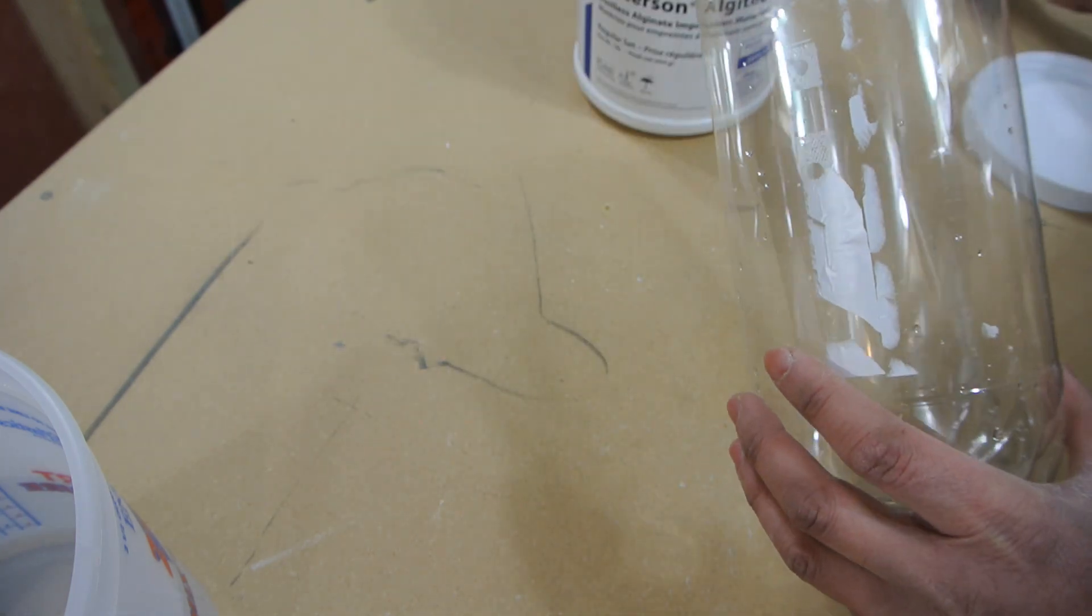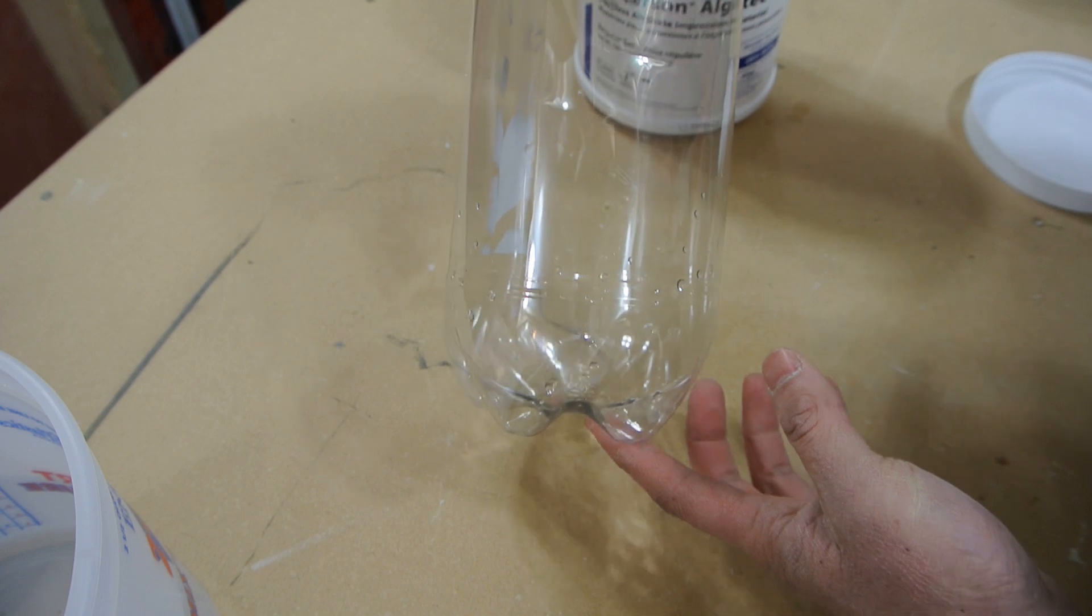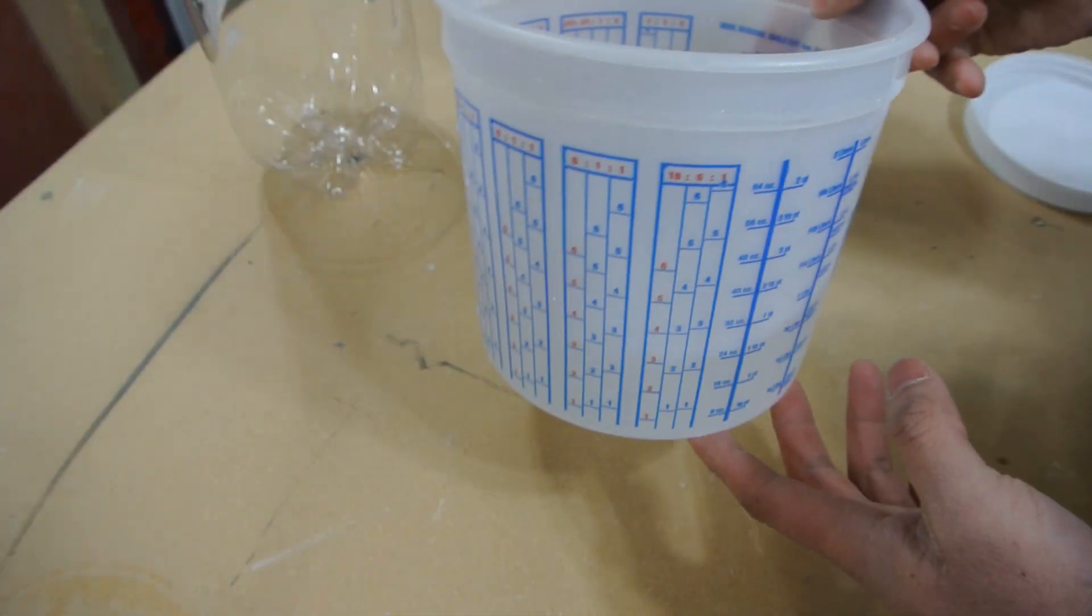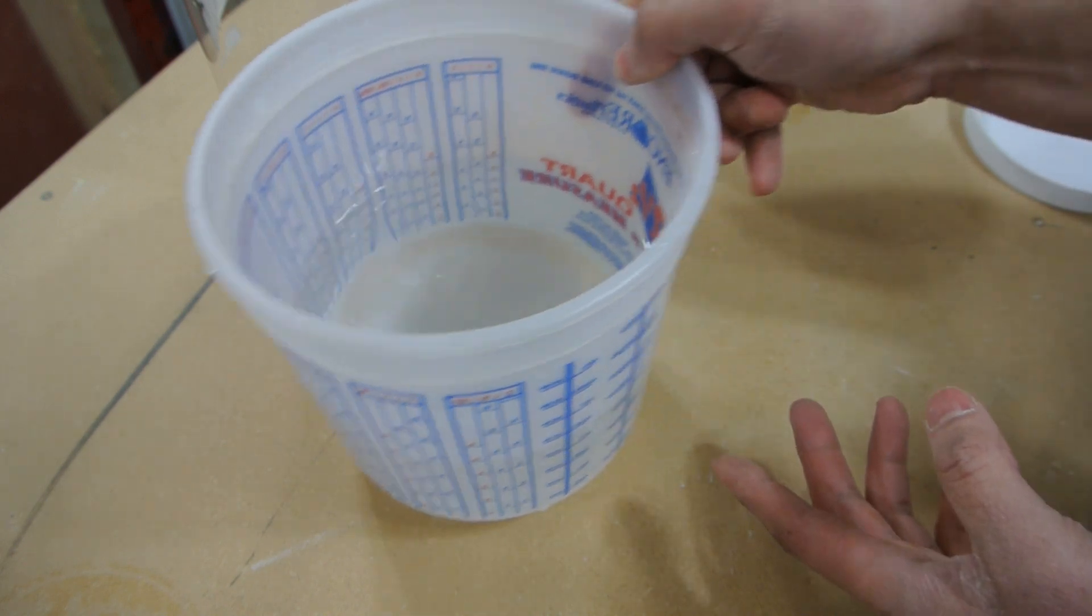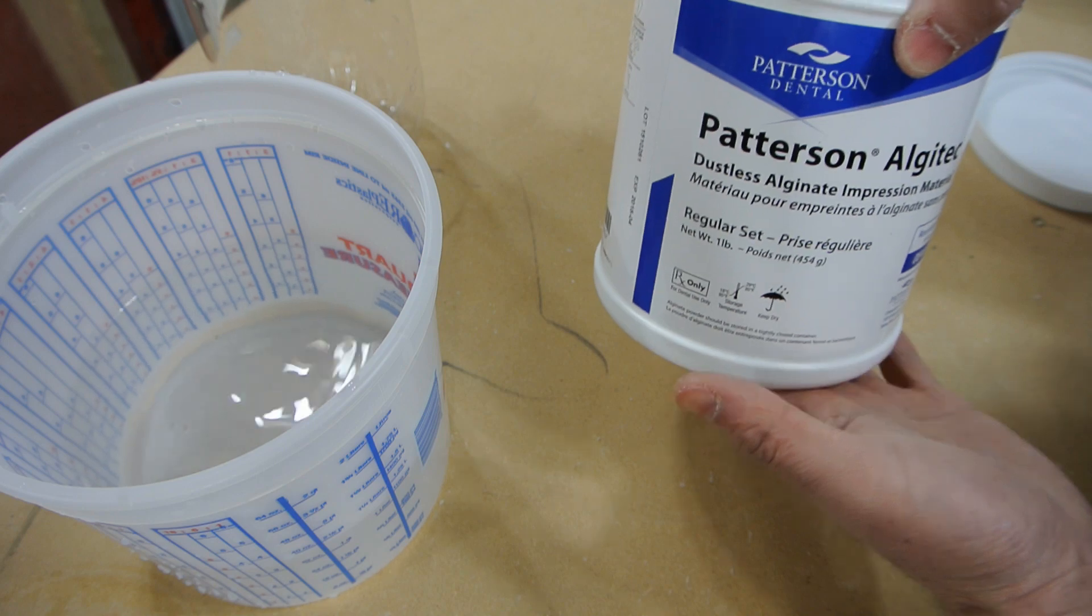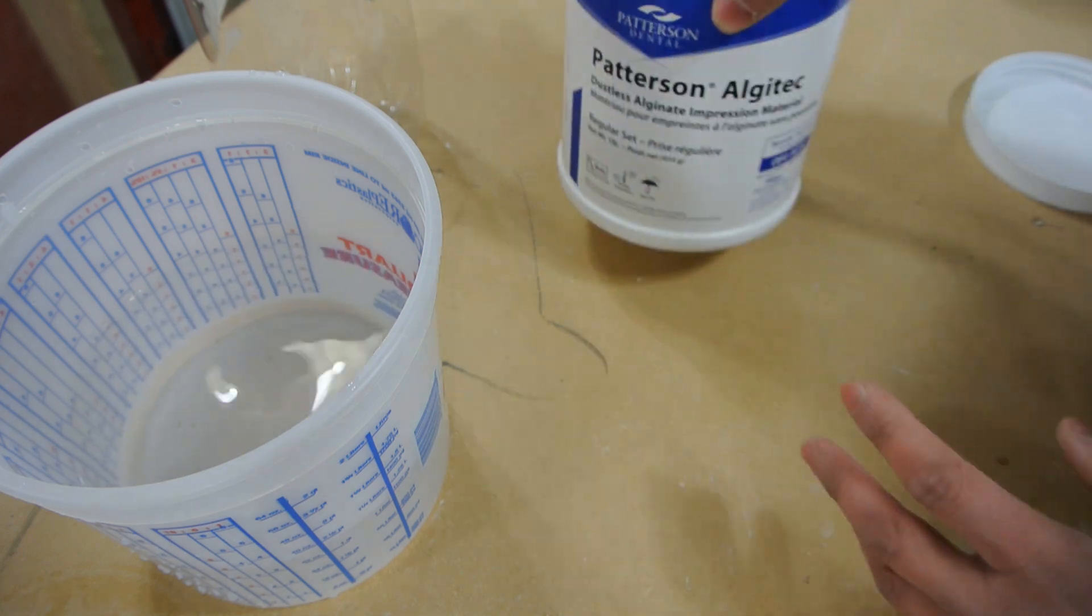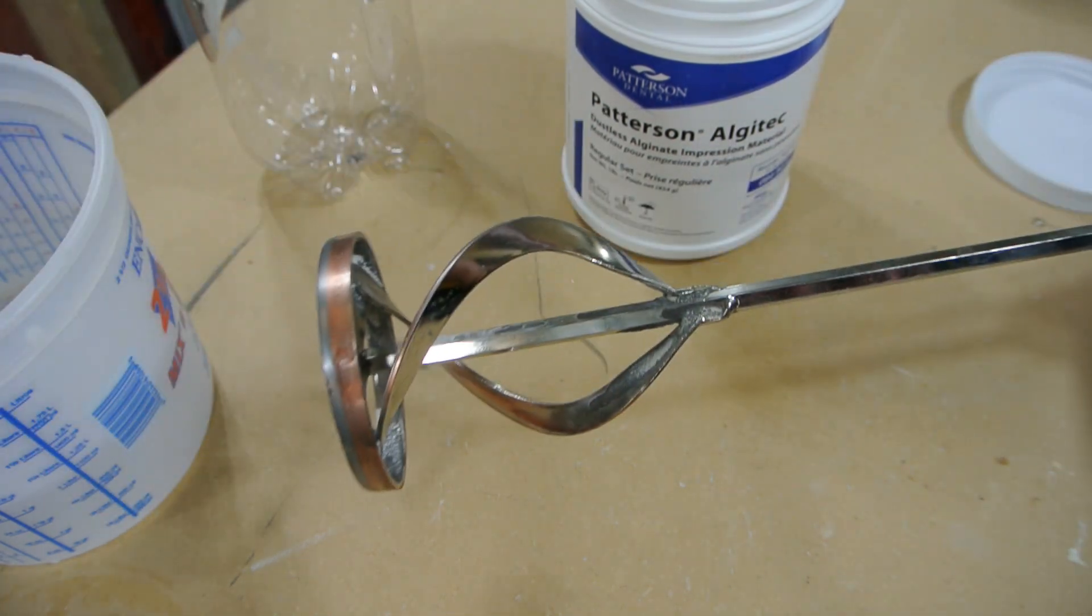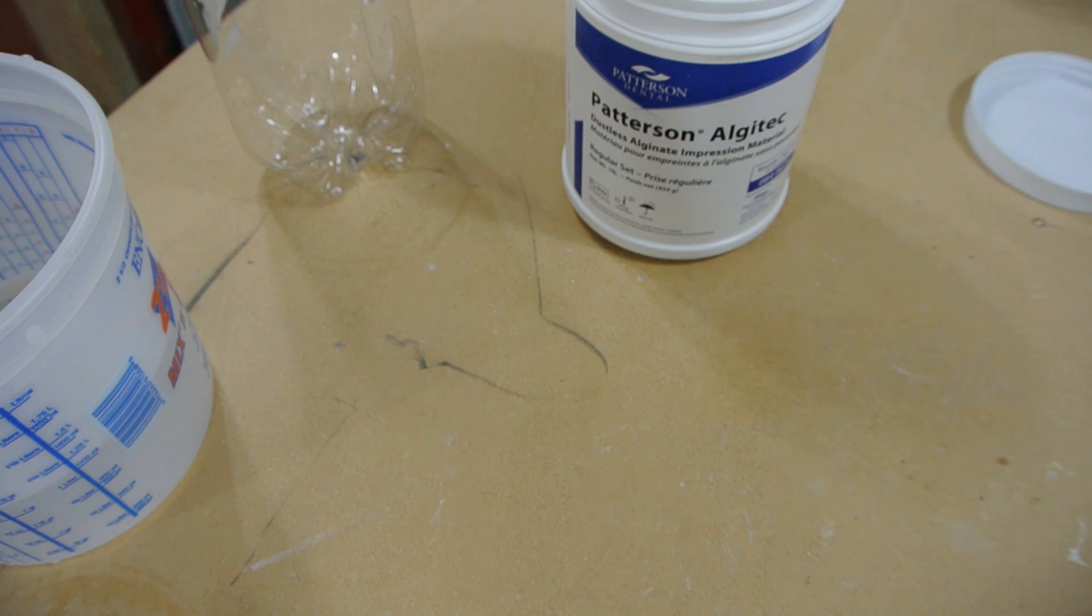I'm going to remelt that wax and pour it back in. So I have a two liter pop bottle and I have a liter of water, which is the amount according to the instructions for this whole container. I'm going to mix it with a power mixer this time, trying not to whip too much air in it.